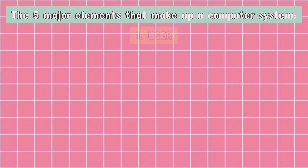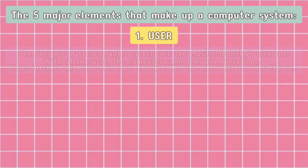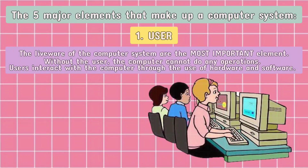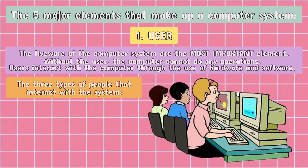First, the user. The liveware of the computer system are the most important element. Without the user, the computer cannot do any operations. Users interact with the computer through the use of hardware and software.